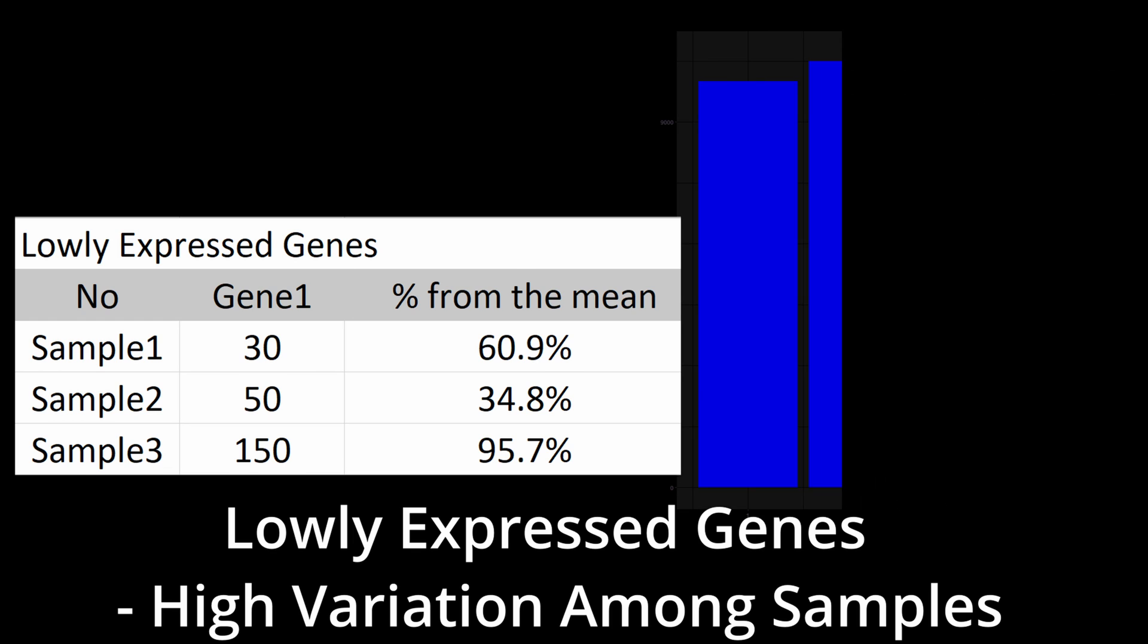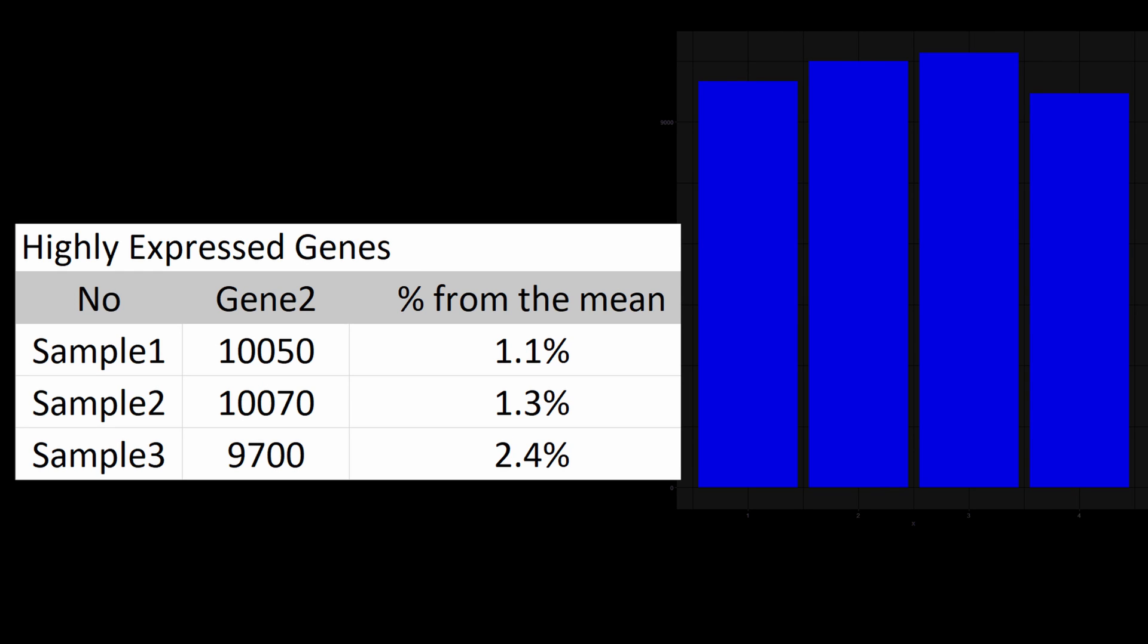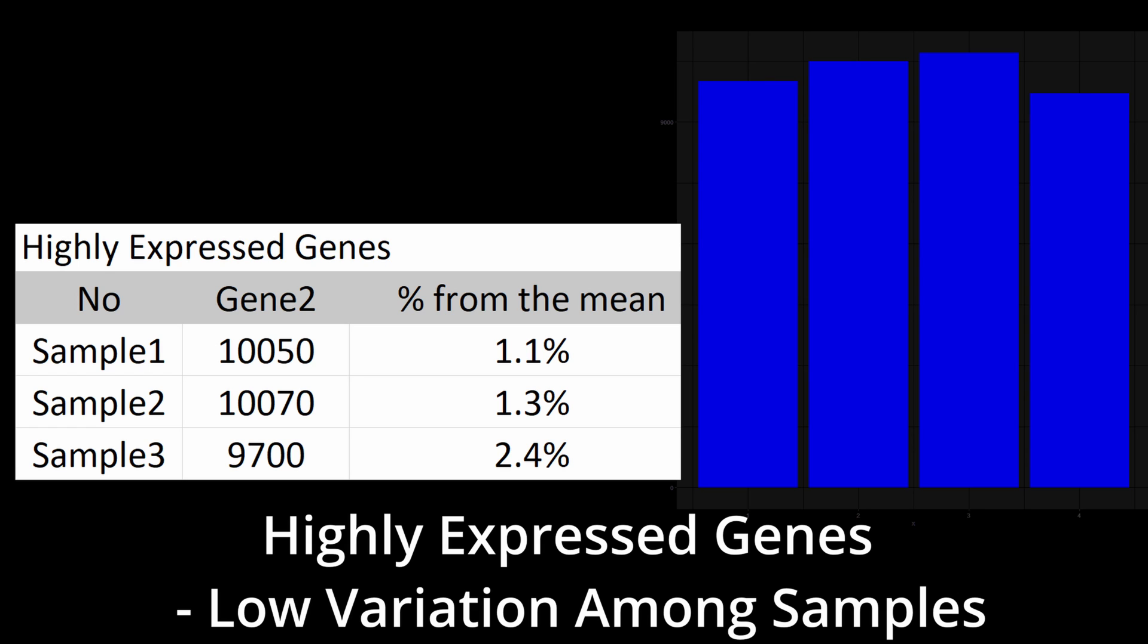But if you have another gene that is highly expressed, like 10,000 times, it is likely that from sample to sample you have 10,500, 10,700, or 9,700. So the percentage variation is going to be dependent on the gene count.